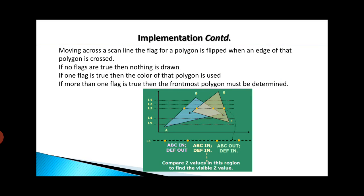Now let's see from this figure how we can decide whether we are inside or outside of a polygon. We will use the flag of the polygon table. The value of the flag is either set to 'in' or 'out'. If we are inside the polygon, the flag is set to 'in'. If we are outside the polygon, the flag is set to 'out'. If no flags are true, then nothing is drawn. If one flag is true, then the color of that polygon is used.